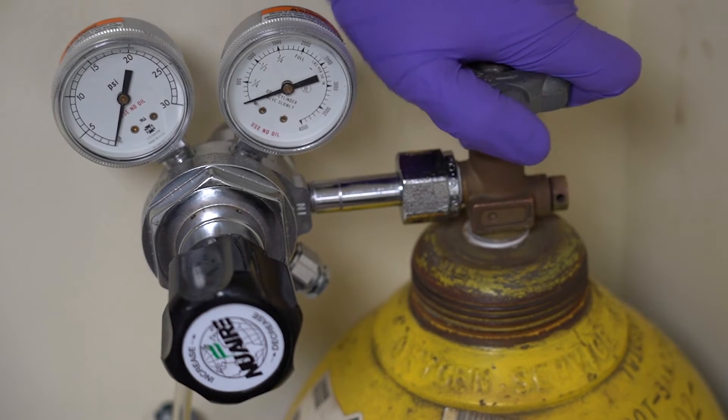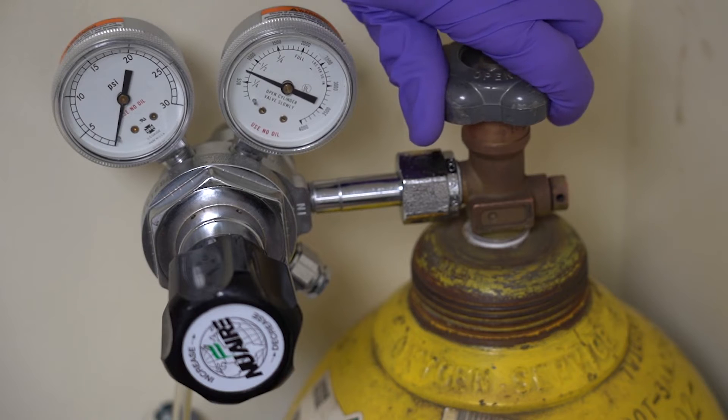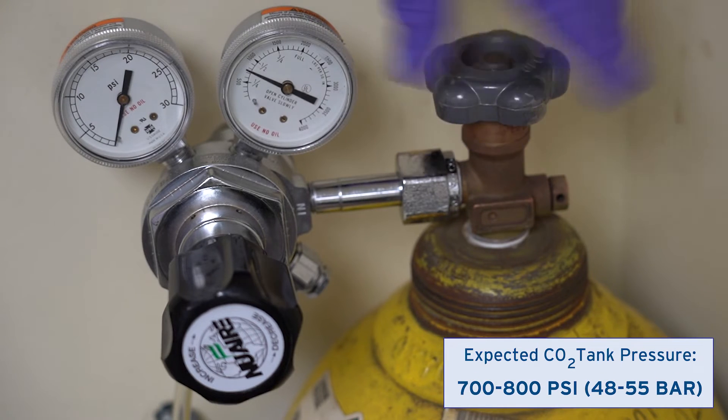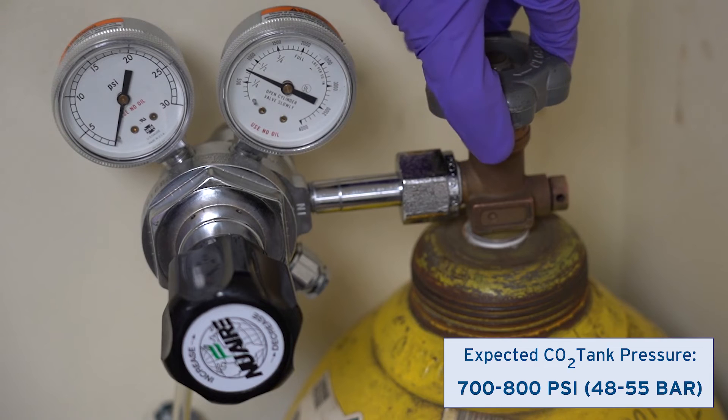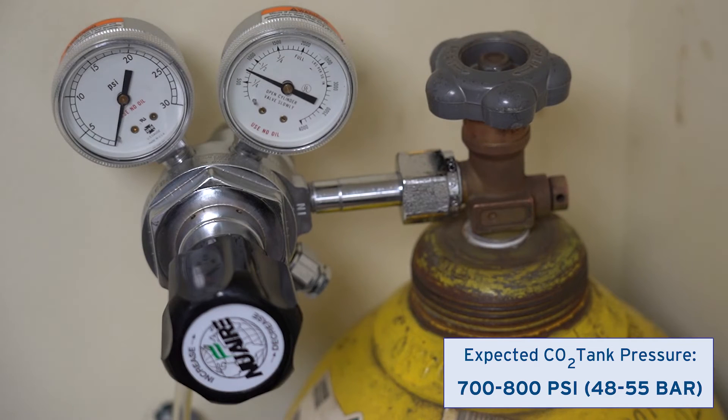Stand clear and open the valve on the CO2 tank. Watch the gauge on the high-pressure side of the regulator increase to 700 to 800 psi or 48 to 55 bar as gas flows into it from the tank.